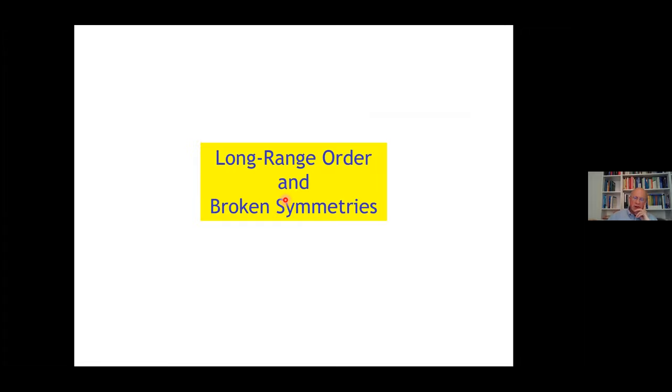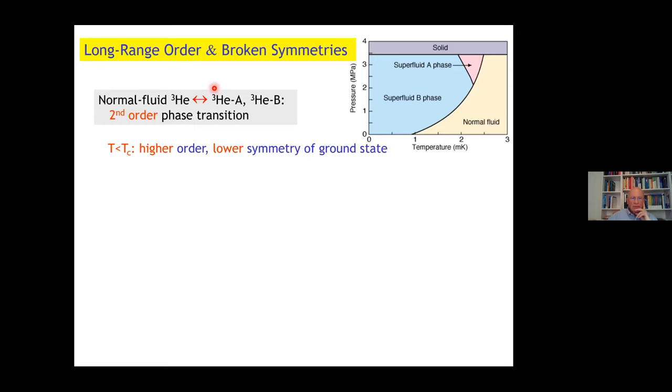Let's try to bring some order into this mess and talk about long-range order and broken symmetries. This we learn from particle physics and it is very helpful here. The transition from the normal liquid into the A phase or into the B phase are both second order, continuous phase transitions. Below T_C we have a higher order but simultaneously a lower symmetry of the ground state.